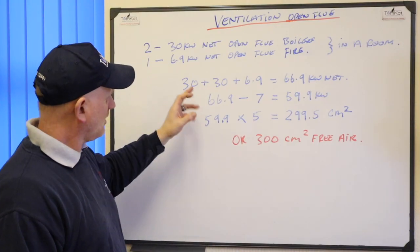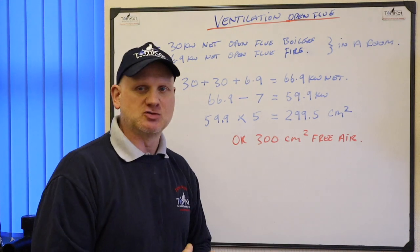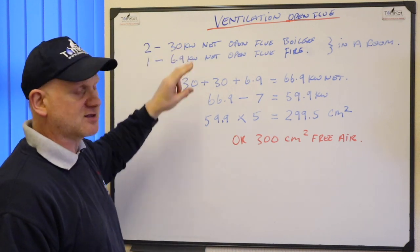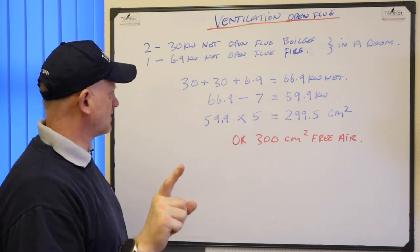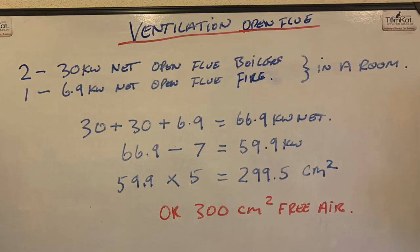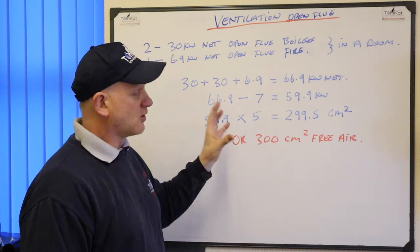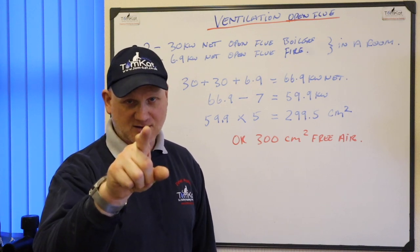Now what we do is minus a 7. We don't minus a 7 for each individual appliance, because you can only apply adventitious air once — even if you have two or more appliances, you add them together and minus one 7, not a 7 for each appliance. So we have 66.9 minus 7 equals 59.9 kilowatts, times 5 — because you need 5cm² of free air per kilowatt — which gives us 299.5cm² of free air, or you could round it up to 300cm².